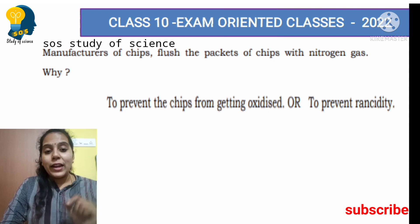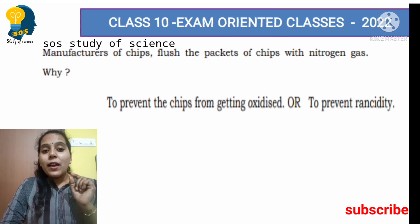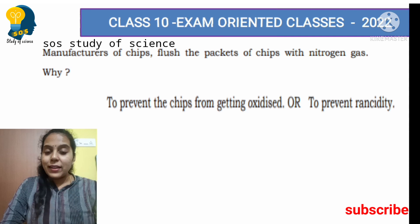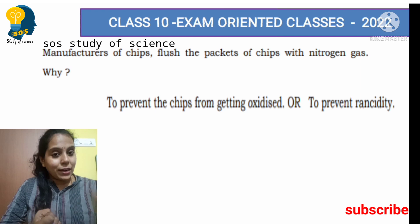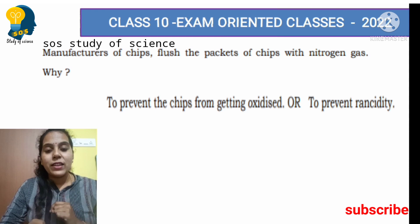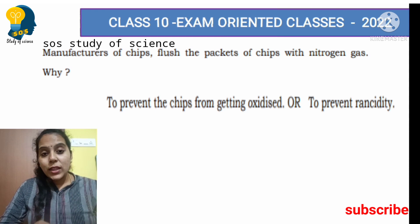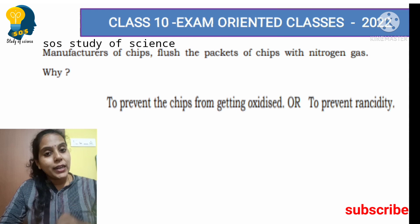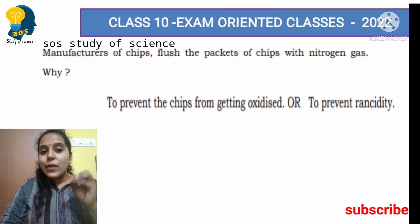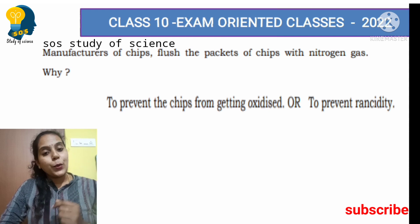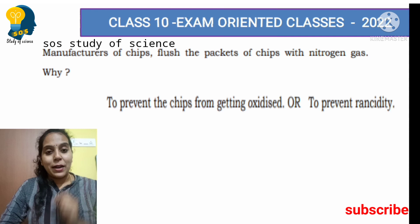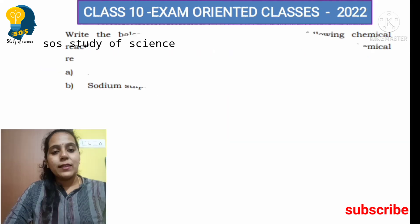Another important concept to know: write the methods to prevent rancidity. The methods are: one, flushing with nitrogen gas as just understood; two, keeping food in an airtight container; three, adding antioxidants. Adding antioxidants also helps prevent rancidity. These are some of the ways to prevent rancidity.